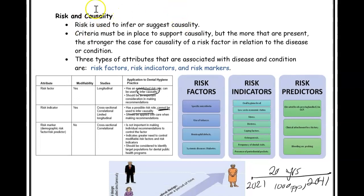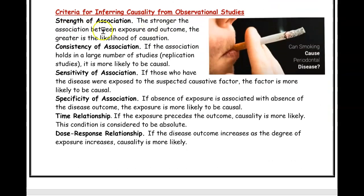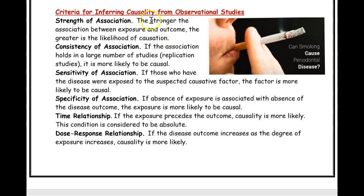When looking at causality for periodontal disease, we ask: can smoking cause periodontal disease? There are specific criteria we look for. The first is strength of association — the stronger the association between the exposure (tobacco/smoking) and the outcome (periodontal disease), the more likely it causes it. If we see strong consistent links between tobacco and periodontal disease across studies, that supports causality.